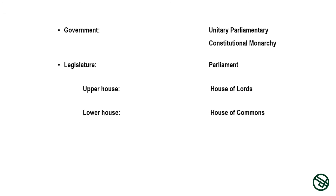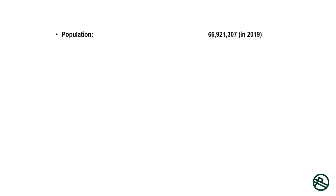Government: unitary parliamentary constitutional monarchy. Legislature: Parliament. Upper House: House of Lords. Lower House: House of Commons. Constitution Act: December 6, 1922. Population: 66,921,307 in 2019.